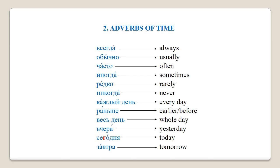Now let's have a look at some new adverbs of time. I will read each one out twice, so please repeat after me: всегда (always), обычно (usually), часто (often), иногда (sometimes), редко (rarely), никогда (never), каждый день (every day), раньше (before/previously), весь день (all day), вчера (yesterday), сегодня (today), завтра (tomorrow).